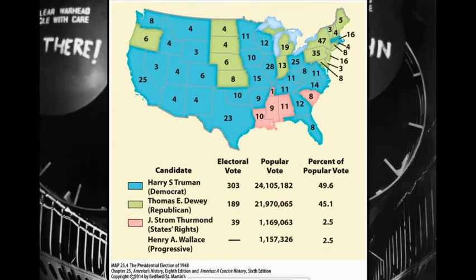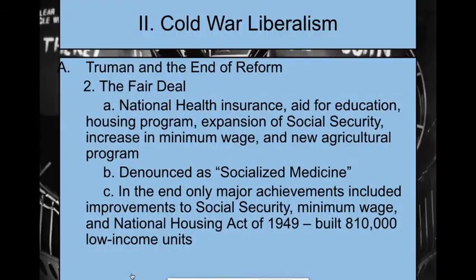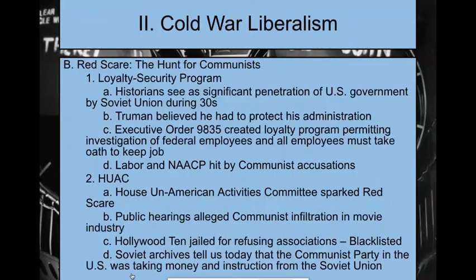The Dixiecrats took the Southern states. Thomas Dewey didn't take too much except for New England and a couple of Midwestern states. Truman institutes the Fair Deal: national health insurance, aid for education, housing programs, expanding Social Security, and an increase to the minimum wage — all of this is what he wants to do, and he succeeds at it.